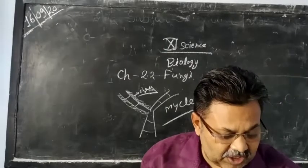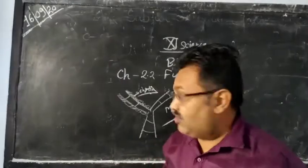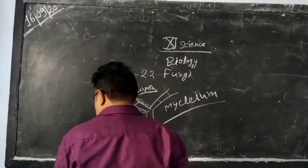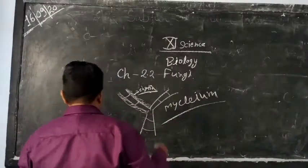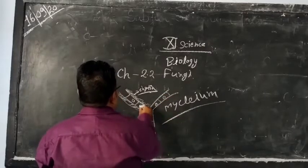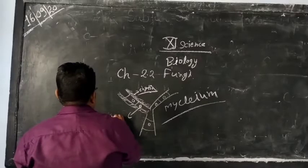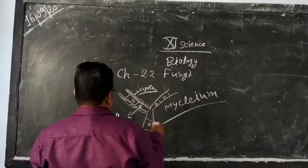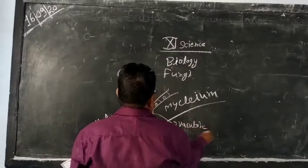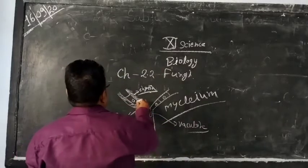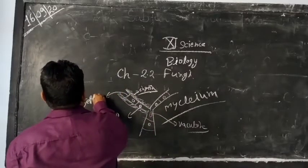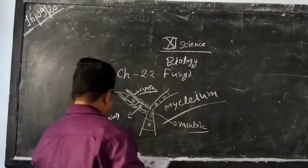The structure of the fungal thallus is made up of chitin. It has a nucleus, and some large vacuoles are also present, which are the storage material vacuoles. The hyphae also contain septa. This is the overall structure of the fungus.